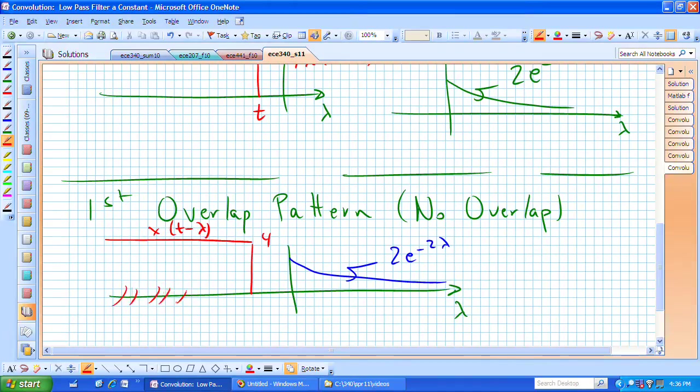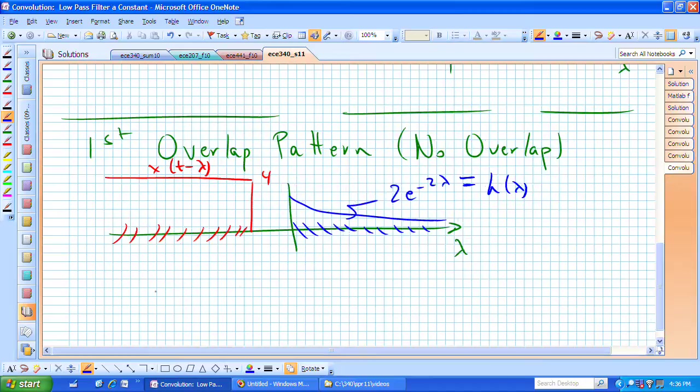This particular interval of support is not overlapping with the interval of support for h of lambda, and because of that, we can see then that this pattern is true.